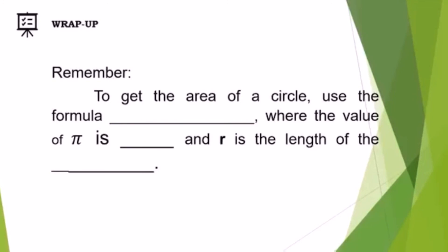Let me check if you understood our lesson for today by providing the correct words to complete the statement. To get the area of a circle, use the formula area equals pi r squared, where the value of pi is 3 and 14 hundredths, and r is the length of the radius.